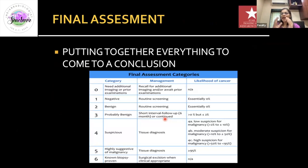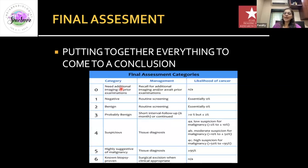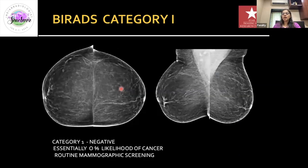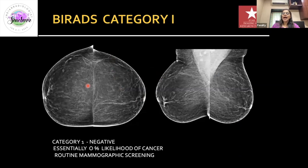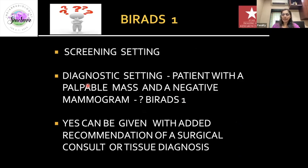You then put all the information together and give a logical conclusion. There are seven assessment categories. Category 0 requires additional imaging — ideally we should complete imaging and give one of the remaining six. BI-RADS 1 is negative: a nice fatty breast with nothing remarkable, essentially zero percent likelihood of cancer, and the patient returns to routine screening — given in the screening setting.